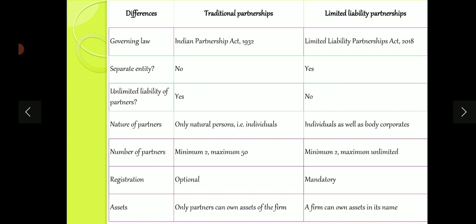Regarding registration, in traditional partnership, registering the partnership deed is optional. But under LLP, it is mandatory to register the partnership. Regarding assets, in traditional partnership, since the firm and partners are not separate — they are the same — partners own all the assets. But in LLP, since the partnership firm is different from the partners, all assets belong to the firm, not to the individual partners. These are the differences between traditional partnership and LLP.